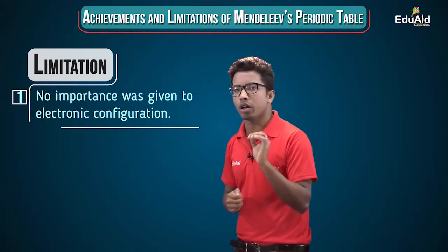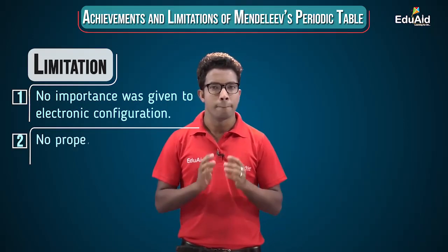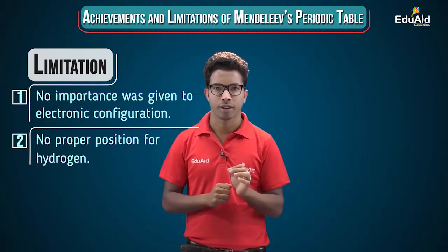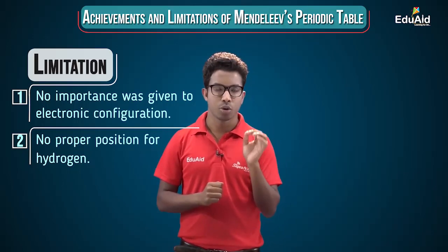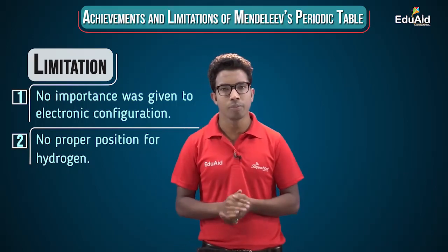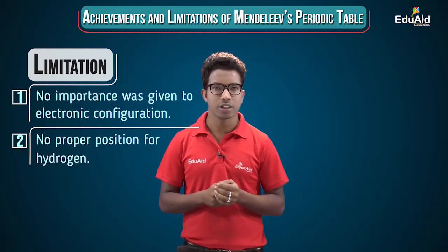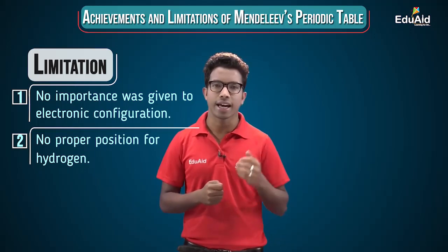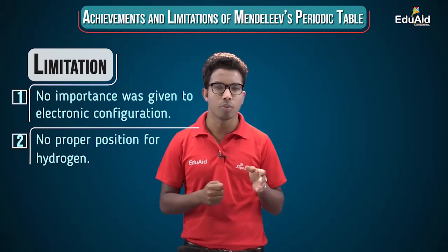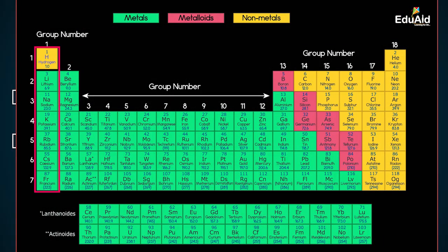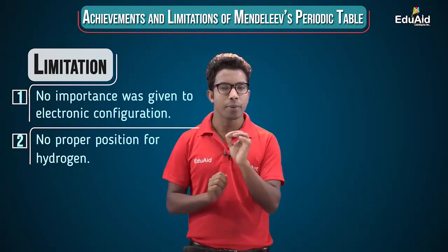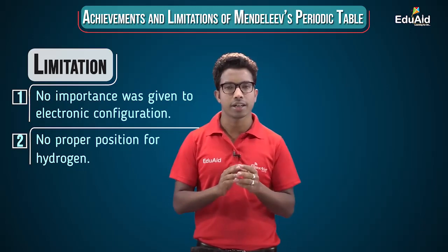The next and most important limitation is that Mendeleev was not able to give any fixed or proper position to hydrogen. Hydrogen showed certain characteristics of alkali metals and certain characteristics of halogens. Alkali metals like lithium, sodium, potassium, rubidium, and cesium are in the first group, while halogens like fluorine, chlorine, bromine, and iodine are in the seventh group. Hydrogen shows similar characteristics to both groups in certain cases.